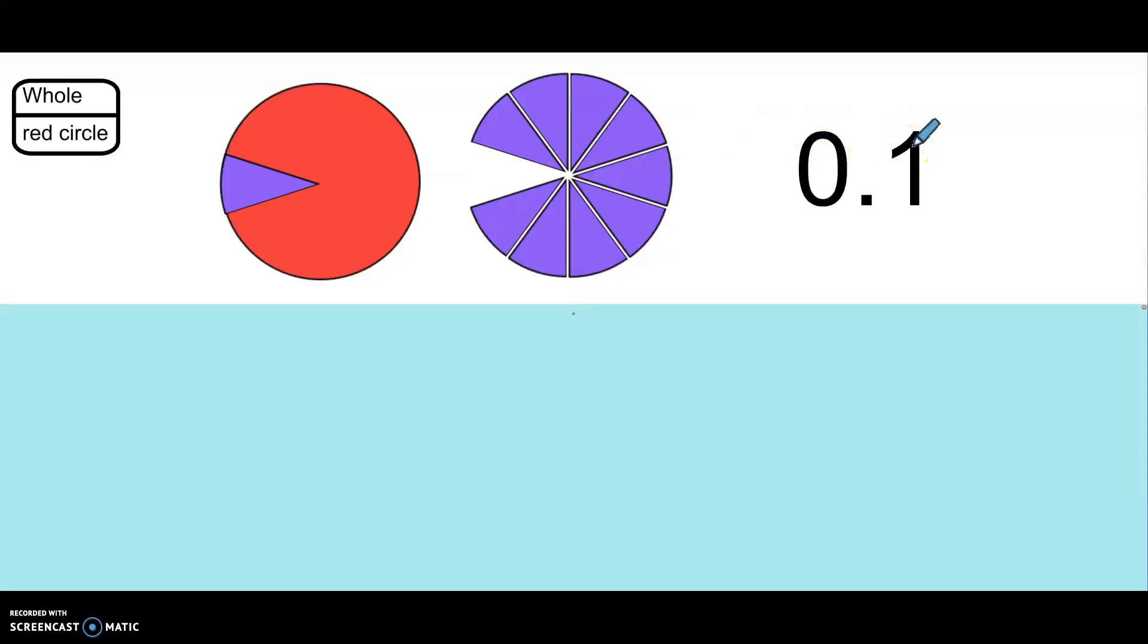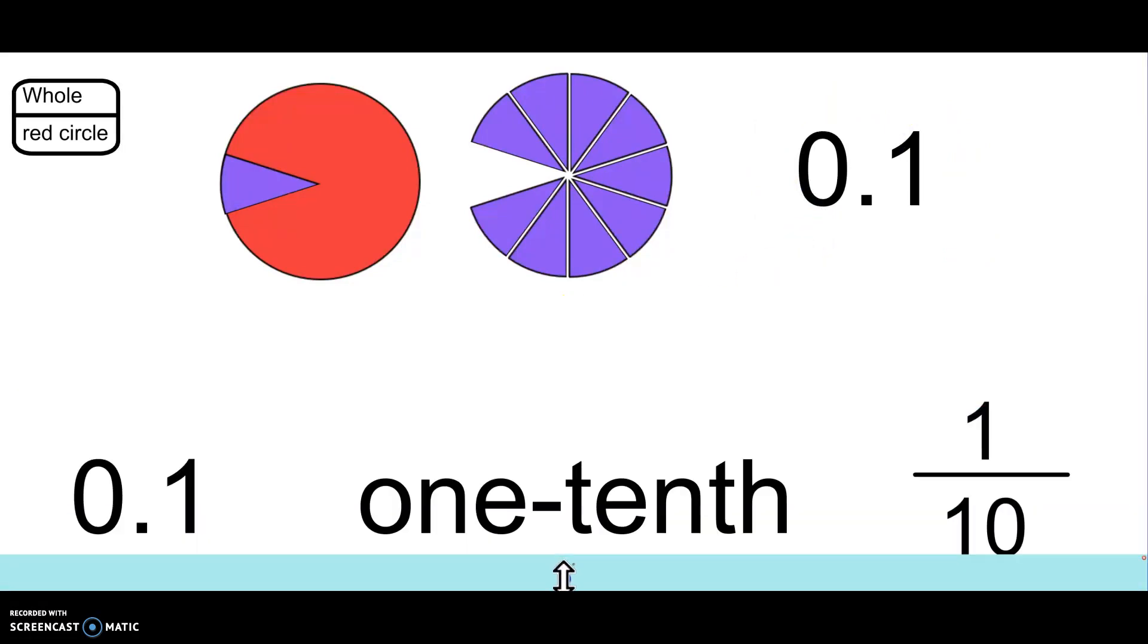This is a decimal. This says one-tenth. Here we show the decimal, the words, and the fraction. They all say the same thing. This circle is covered by one purple piece, one-tenth. This says one-tenth. And the fraction says one-tenth.